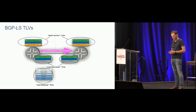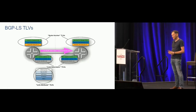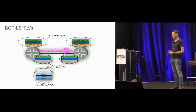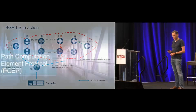BGP-LS uses TLVs to describe nodes — things like IPv4 and IPv6 loopback addresses, and ISO addresses for ISIS speakers. For link attributes: bandwidth, any admin groups configured, IGP metric, and adjacency SIDs if segment routing is being used, since those are covered by traffic engineering extensions to BGP-LS. That's BGP-LS in a nutshell.